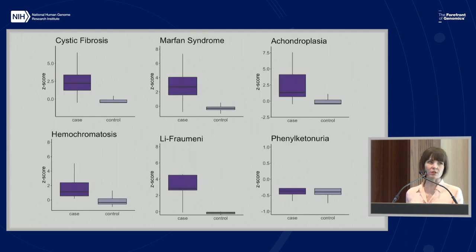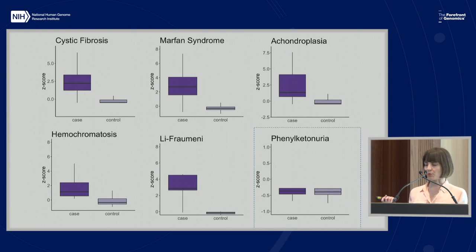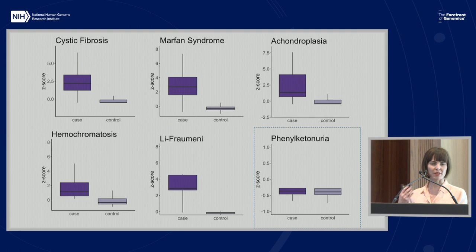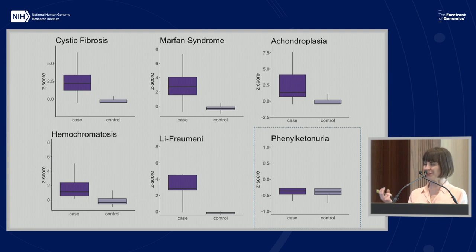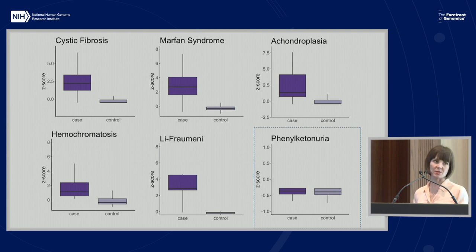We applied this to six different Mendelian diseases chosen by clinicians that were common enough to have enough exemplars to work with, and it worked quite well in all cases. The one exception was PKU — a disease that's on the newborn screening panel. If a baby is diagnosed with PKU and they have proper dietary control, they don't experience any of the clinical symptoms described in OMIM like intellectual disability and seizures. So we accidentally recapitulated how important newborn screening is and how important it is to get a relevant diagnosis to patients at the right time, because these patients in general look exactly the same as healthy controls.